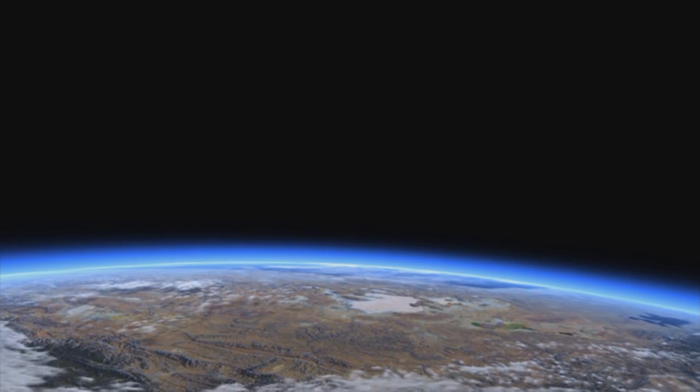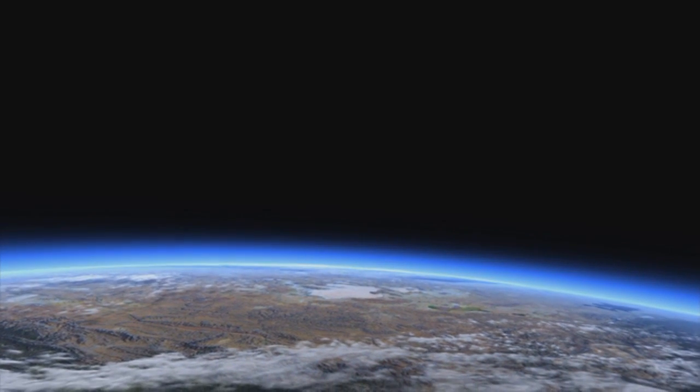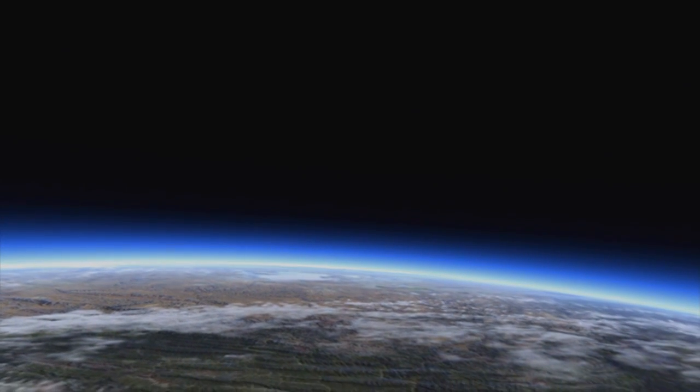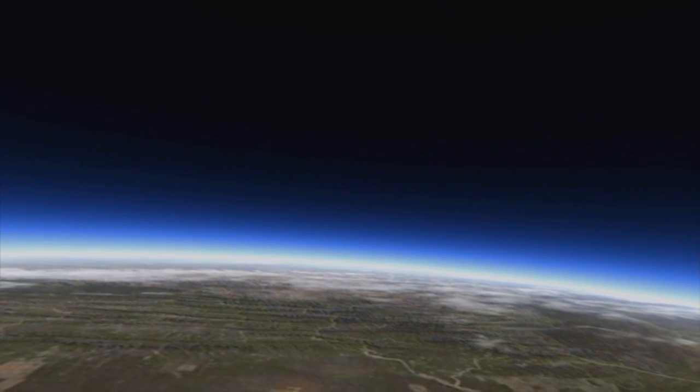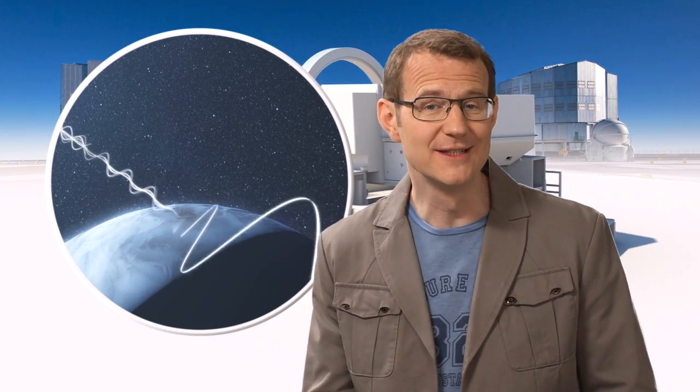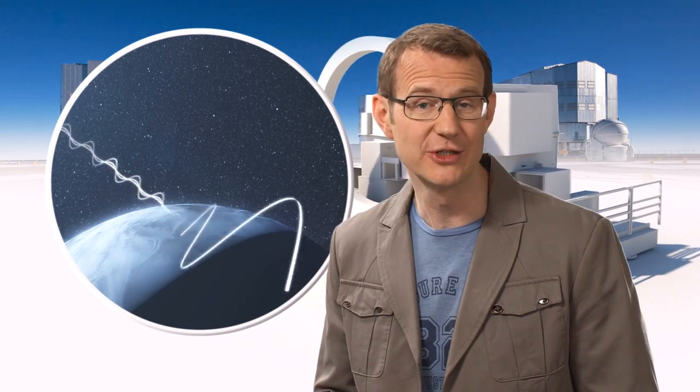The ultimate goal is to one day spot the signatures of life on worlds beyond the solar system by finding evidence of oxygen or the typical green signature of vegetation. Looking at exoplanets in polarized light may well turn out to be key in providing us with our very first signs of extraterrestrial life.